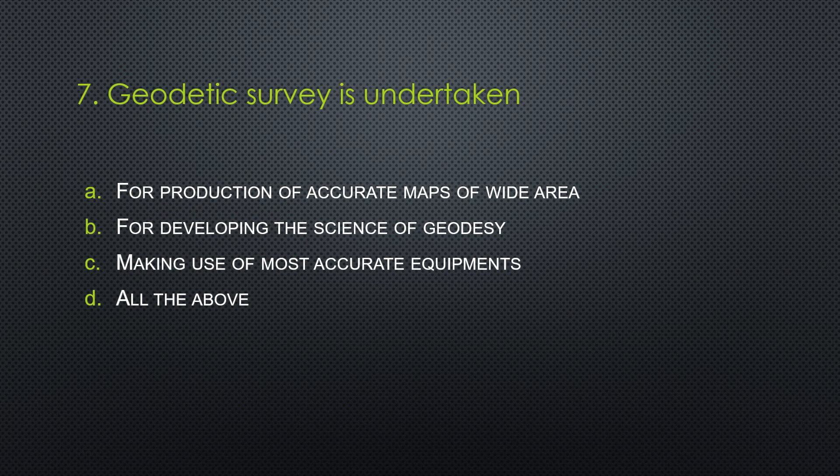Seventh question. Geographic survey is undertaken for: Option A: production of accurate maps of wide areas. Option B: developing the science of geodesy. Option C: making use of most accurate equipment. Option D: all of the above.